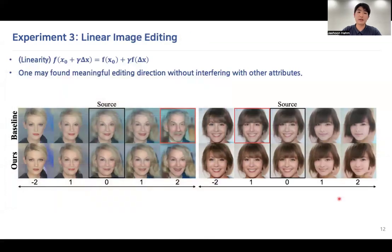The last experiment is linear image editing. With our model equipped with disentangled latent space, one may find meaningful editing directions without interfering with other attributes. For example, for the given image, with our model, we can edit the image through the age axis while not interfering with the gender axis.